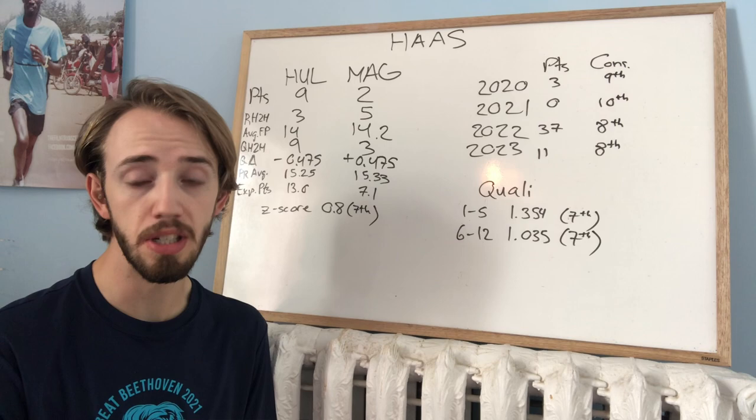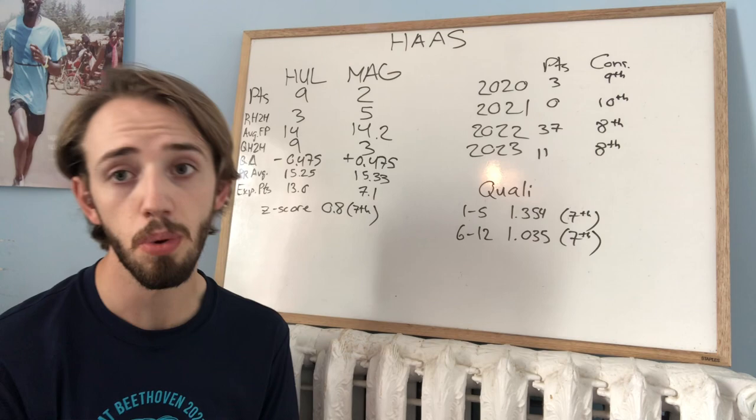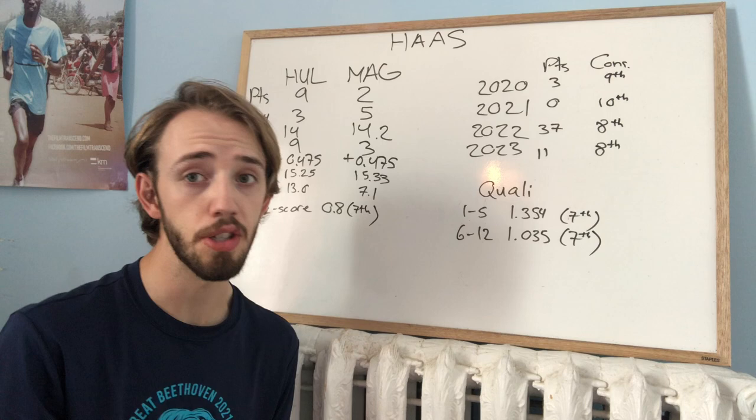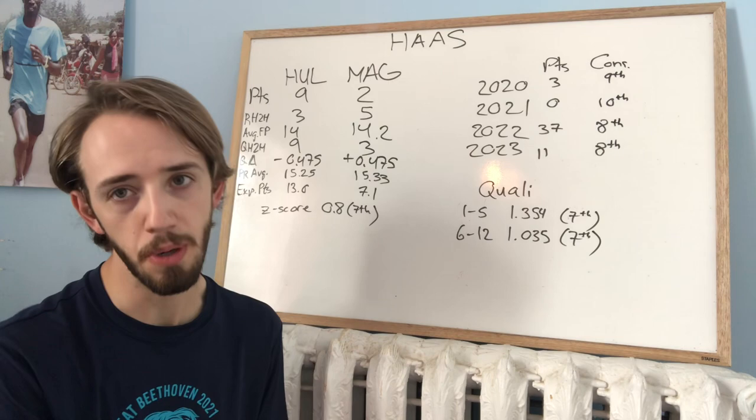Looking at my average, their average position on my power rankings, Hulkenberg 15.25, Magnussen 15.33, which lines up pretty closely with how they've done in the race, which tracks with the fact that I usually bias my power rankings much closer towards the race results and a lot less towards qualifying. So if I did a qualifying-only power ranking, Hulkenberg would probably be much higher.